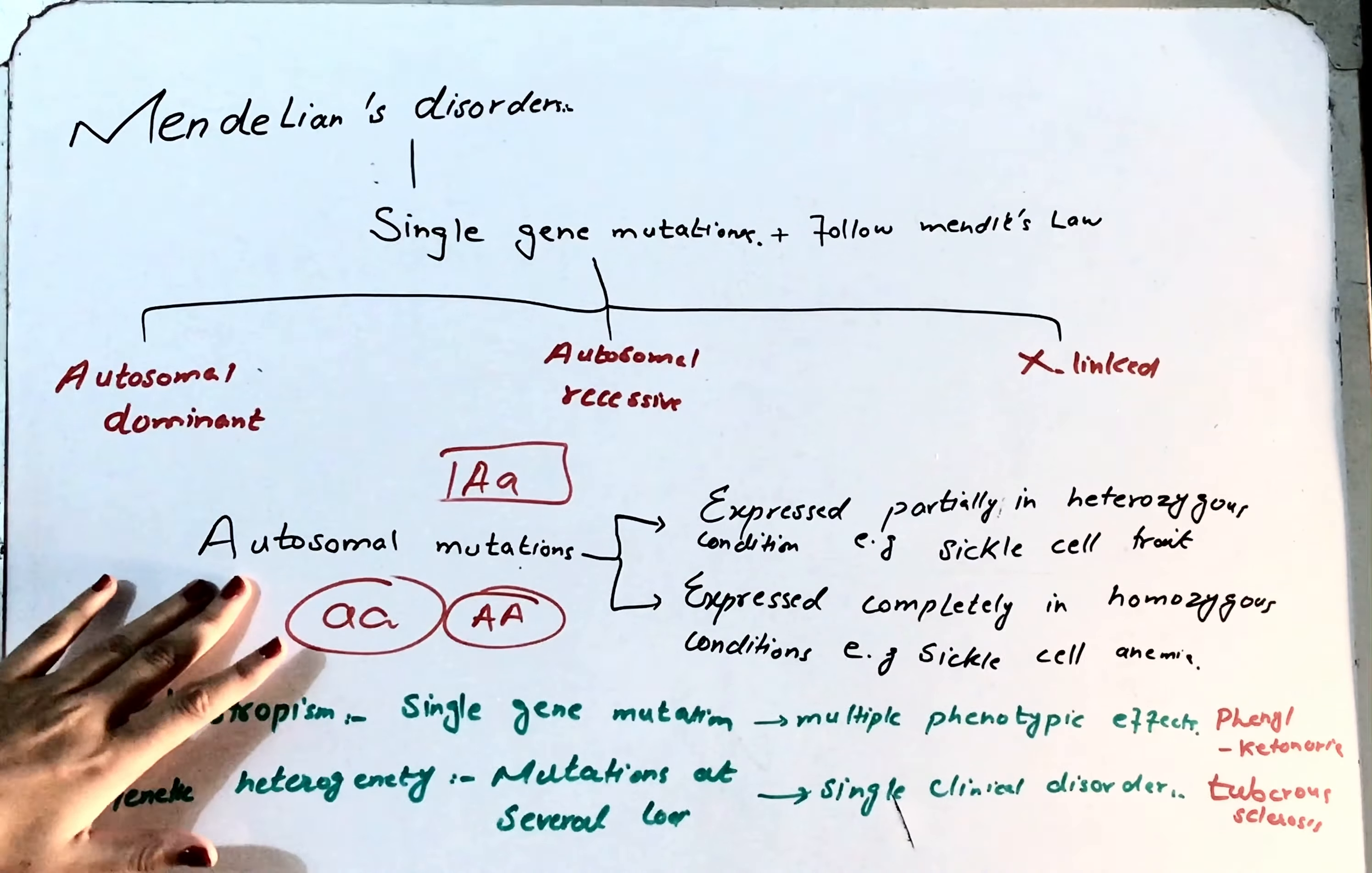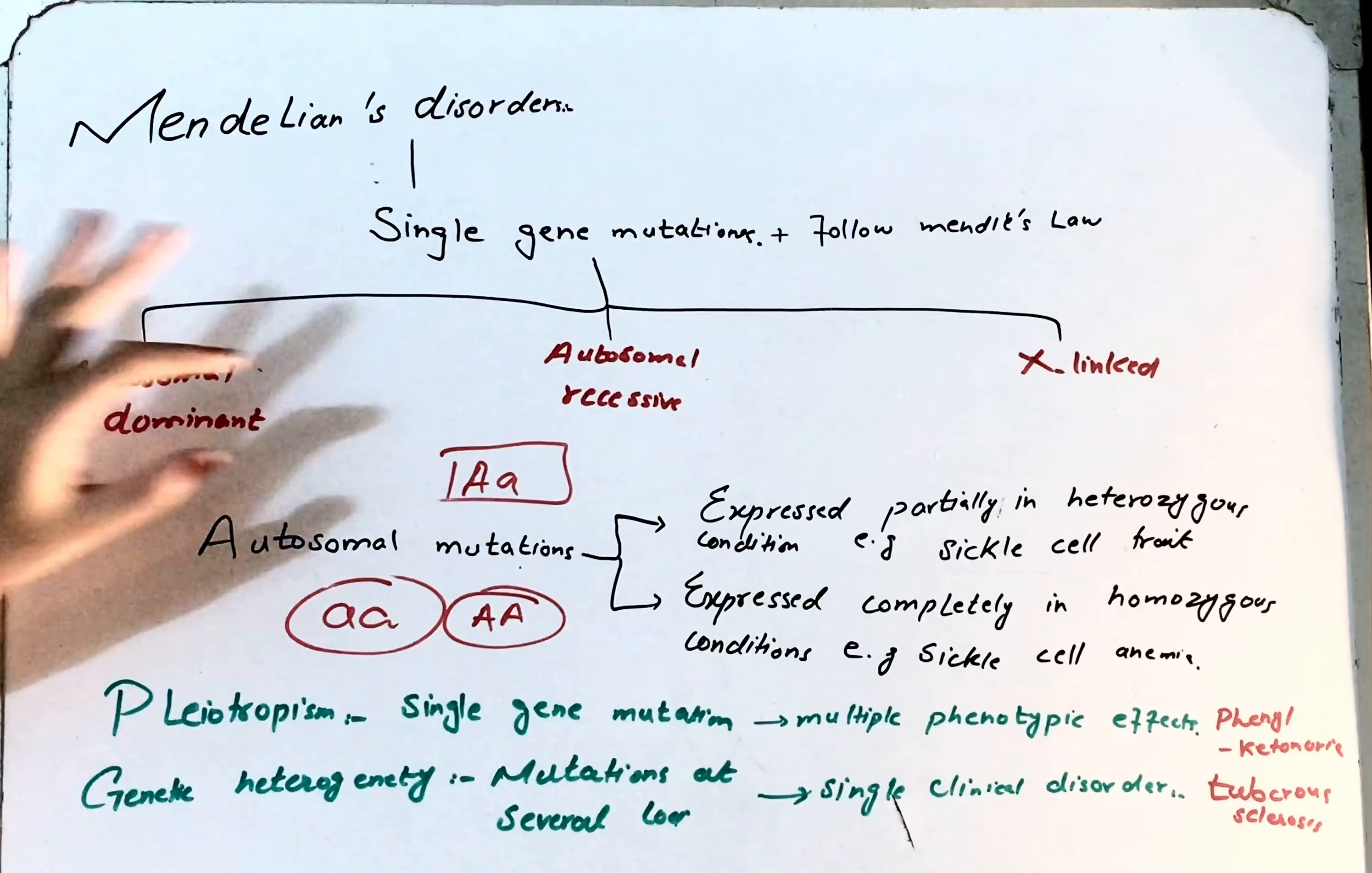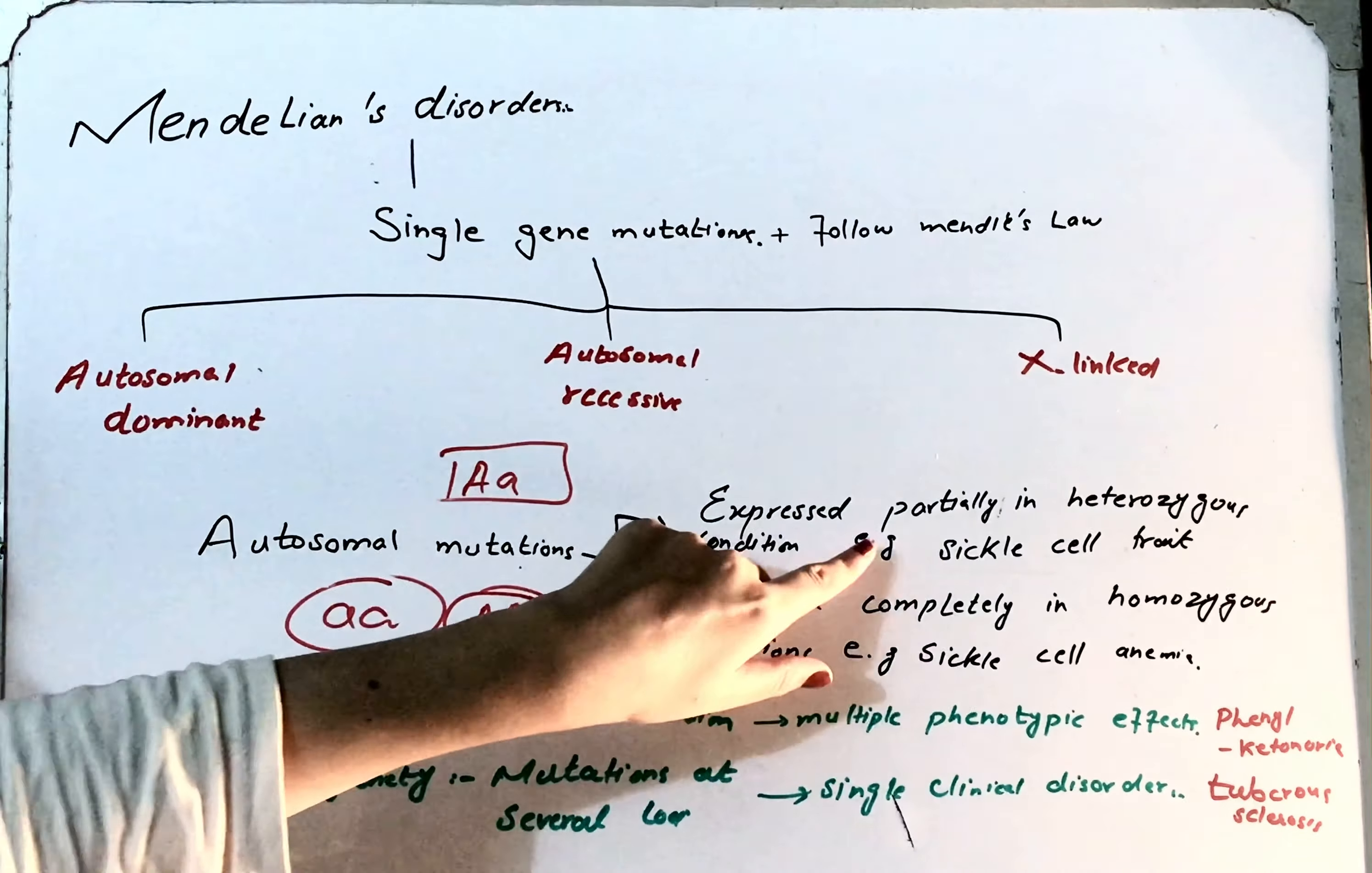Now we're going to study autosomal mutations. Autosomal mutations can express partially as well as completely. If there is a heterozygous condition, where the mutant gene is heterozygous, then there will be partial expression of that trait. An example here is sickle cell anemia.